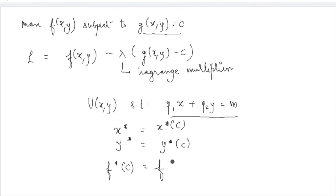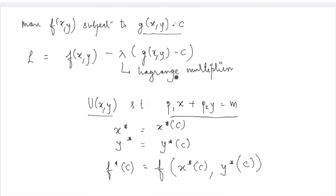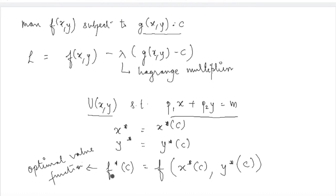Because x* and y* are dependent on c, ultimately the objective function — in this specific example, the utility function — will also be dependent on the value of c. This is called the optimal value function, because it gives the optimum amount of the objective function. So f*(c) gives you the optimum utility which you solve for in the problem.